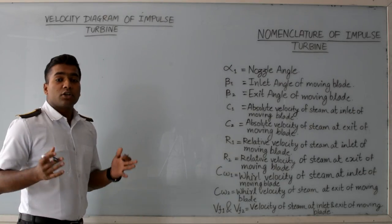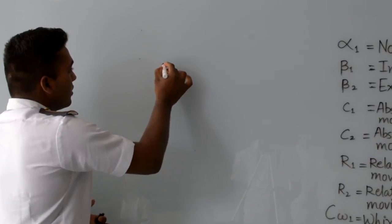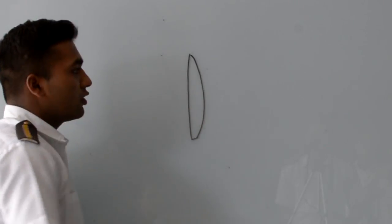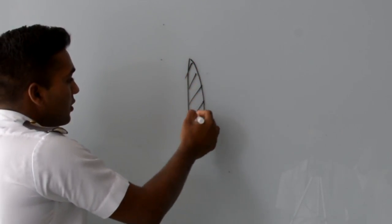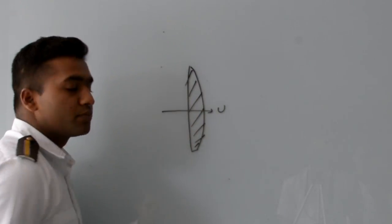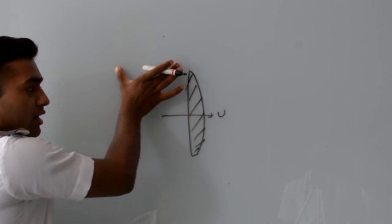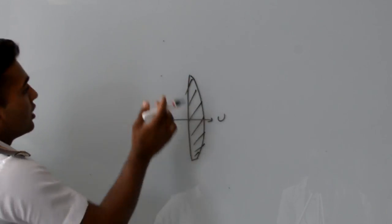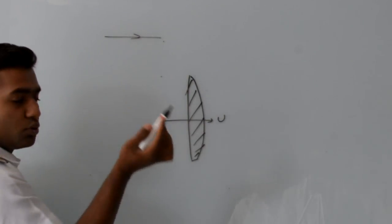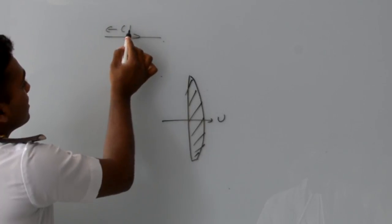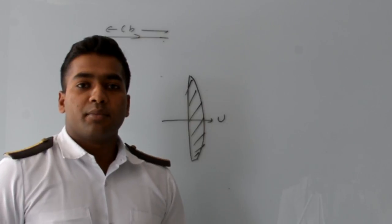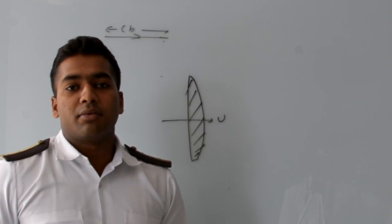Now I am drawing the cross-section of a moving blade. This blade is moving at the blade speed u, represented as cb. I will draw the inlet velocity diagram here and the outlet velocity diagram here. The steam will enter into the moving blade at an angle alpha1 with velocity c1.